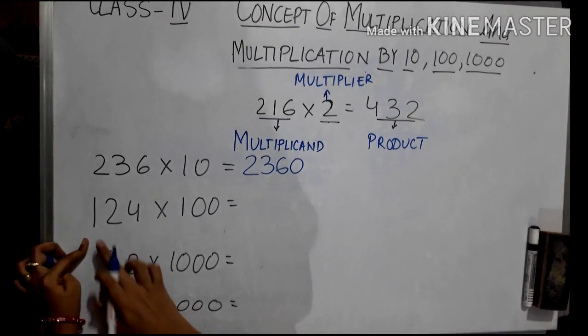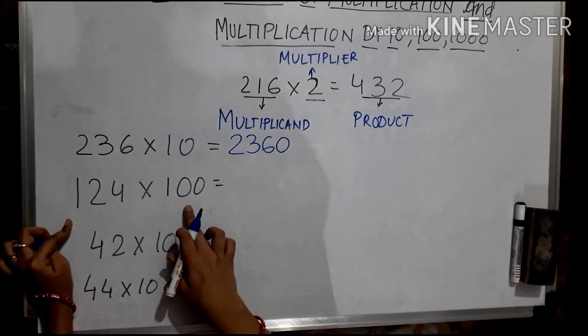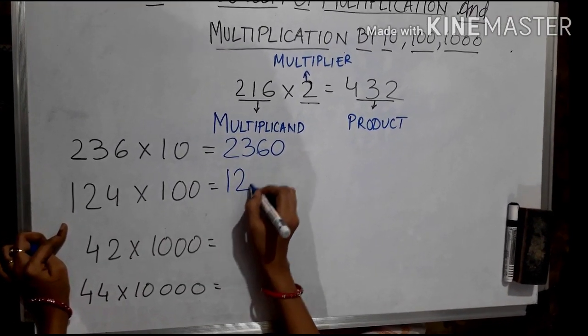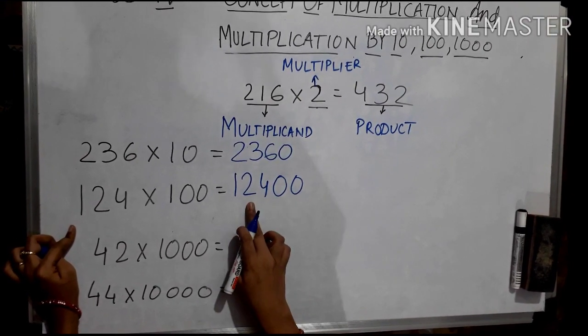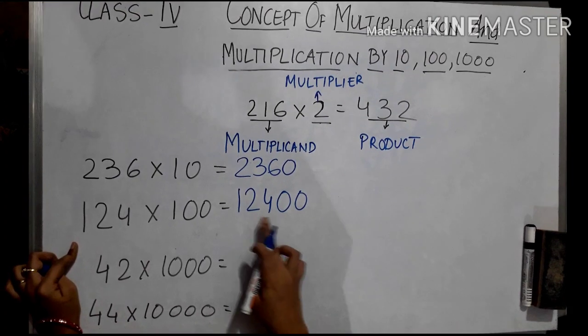Now the second example, 124 is multiplied with hundred. I will simply put one, two, four and two zeros. So this is my product, 12,400.